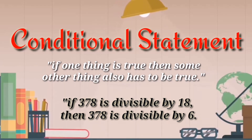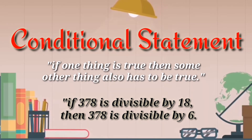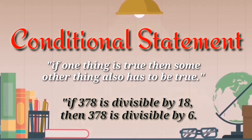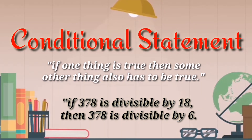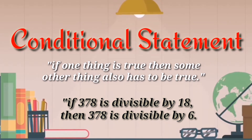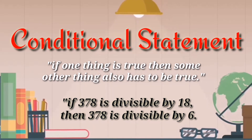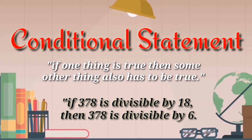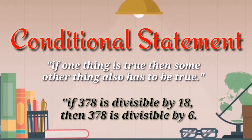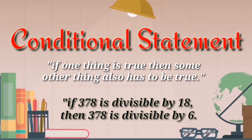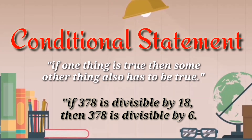If one thing is true — like, if 378 is divisible by 18, that is true — then the other thing has to be true as well, just like 378 is also divisible by 6. Why? Because 18 is divisible by 6. 378 is divisible by 18, therefore it is also divisible by 6.